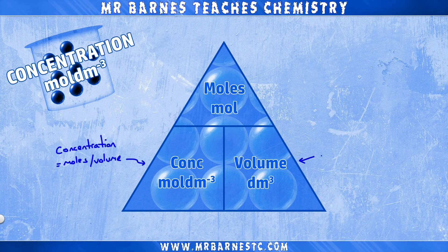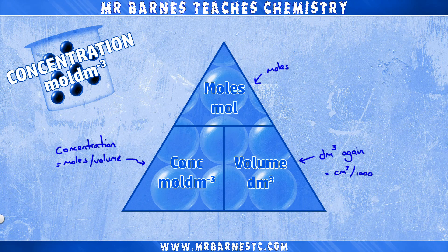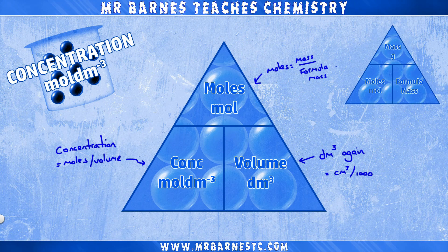To convert centimetres cubed into decimetres cubed, don't forget you need to divide by a thousand. Usually for this question they will give you the moles, unless it's a much higher level question. It may also ask you to work out the moles, which is mass divided by formula mass, as you can see in this triangle here.